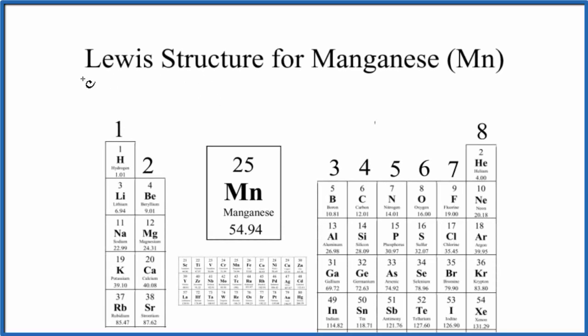So in this video we'll draw the Lewis dot structure for manganese, Mn. If you look at the periodic table, there's a nice regular trend for the main group elements. Group one has one valence electron, group two has two.